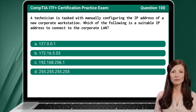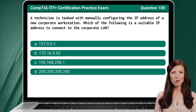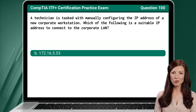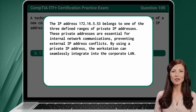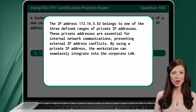Question 100. A technician is tasked with manually configuring the IP address of a new corporate workstation. Which of the following is a suitable IP address to connect to the corporate LAN? The answer is B: 172.16.5.53. This IP address belongs to one of the three defined ranges of private IP addresses. These private addresses are essential for internal network communications, preventing external IP address conflicts. By using a private IP address, the workstation can seamlessly integrate into the corporate LAN.